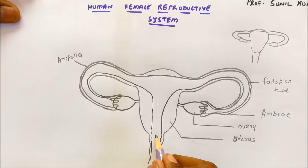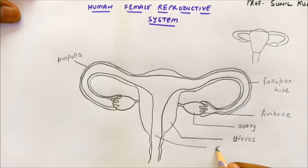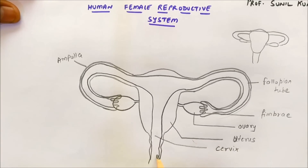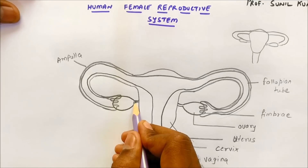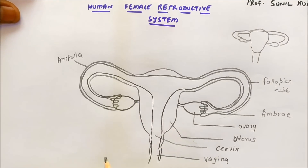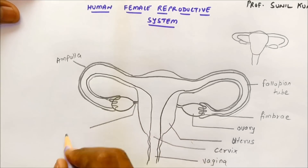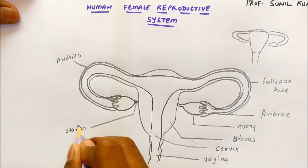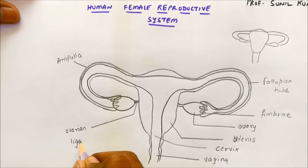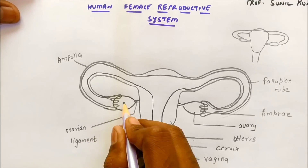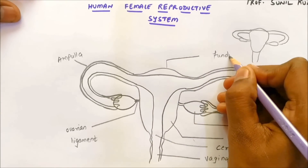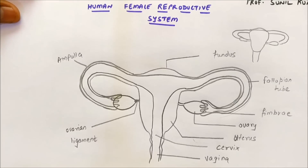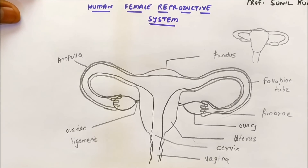The narrow region you can see here is called the cervix. The lower portion is called the vagina. The ovary is attached to the wall of the uterus by a ligament called the ovarian ligament, which connects the ovary and the uterus. The upper dome-shaped swollen part is called the fundus. In this way you can draw the human female reproductive system in a very simple way.